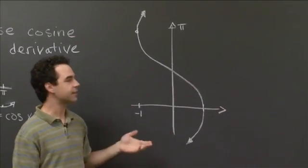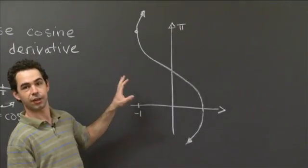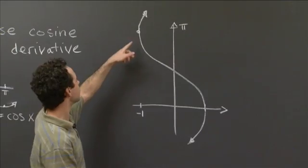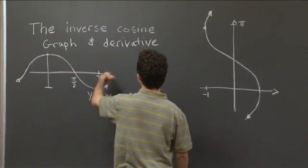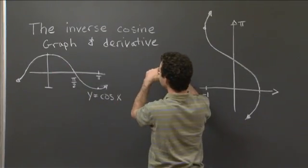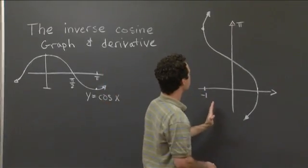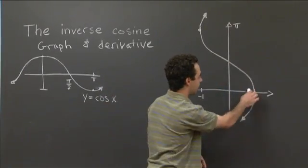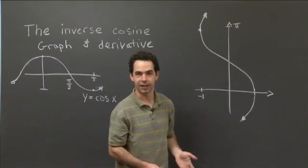So one thing you'll notice about this is that it's not a function. Right, this curve is not the graph of a function, because all these humps on cosine x, there are more humps out here, those horizontal lines cut the humps in many points. And when you reflect, you get vertical lines that cut this curve in many points. So it doesn't pass the vertical line test.